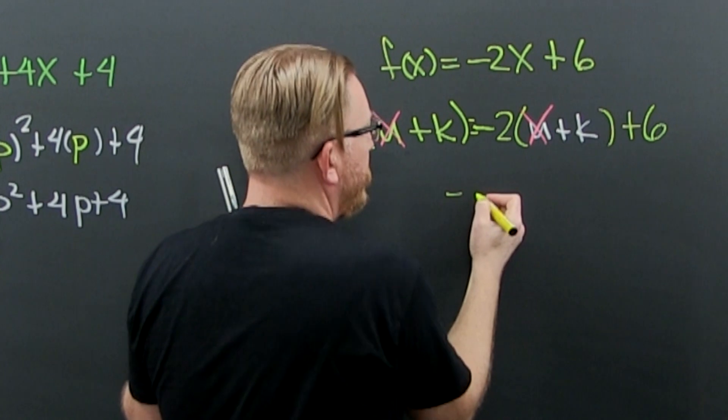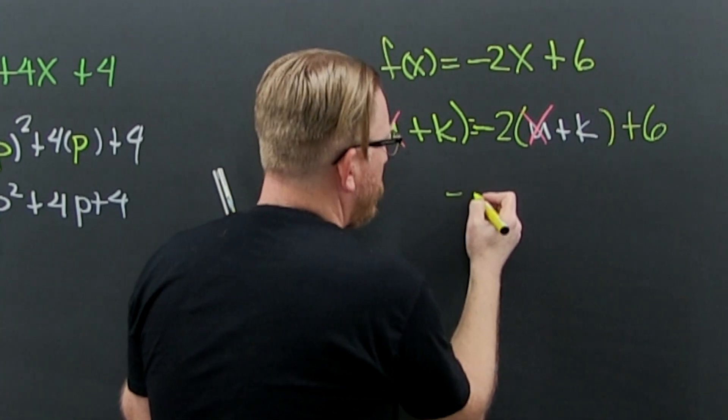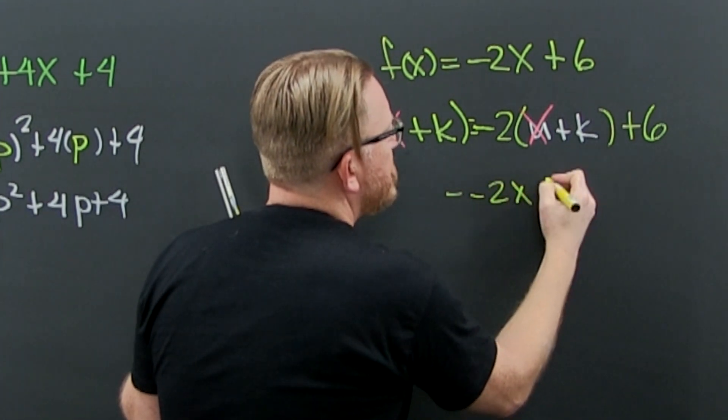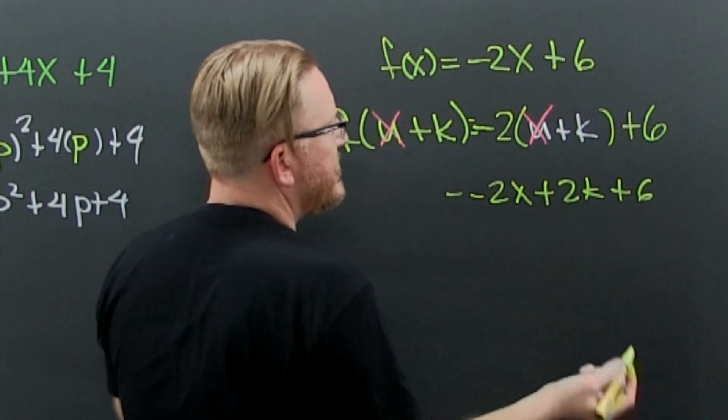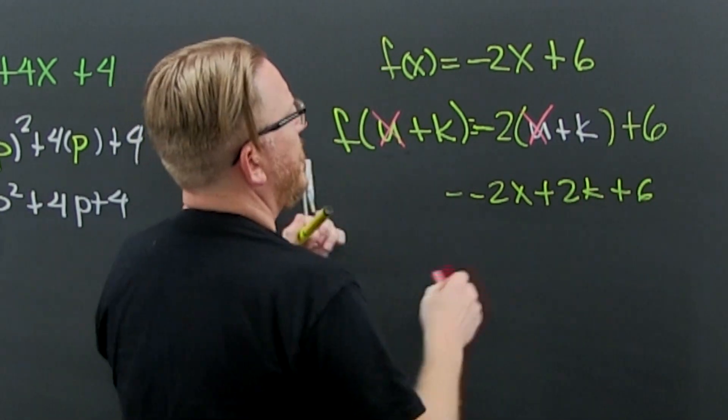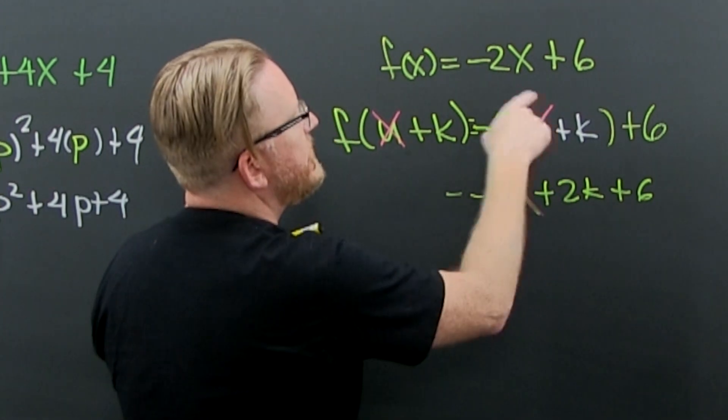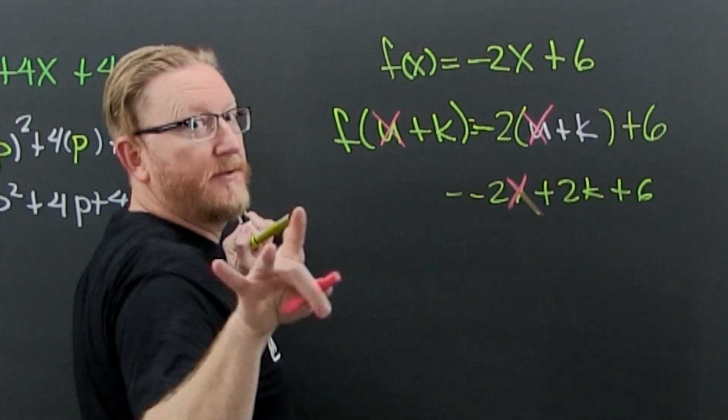I can clean it up a little bit: -2u - 2k + 6. I was using my x right there, so it went here and there, and I'm done.